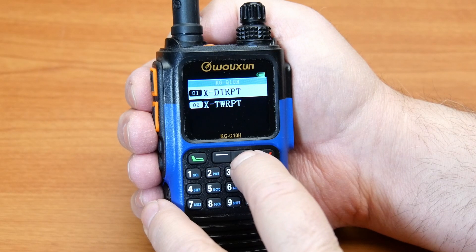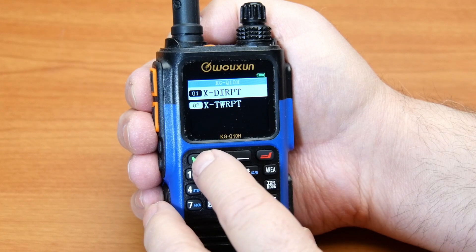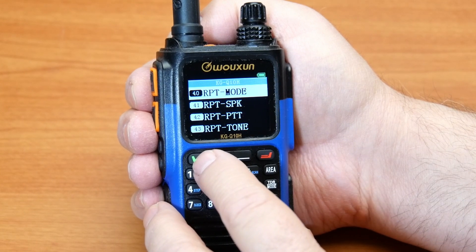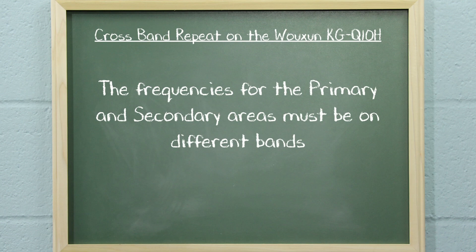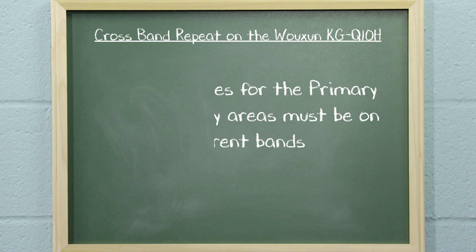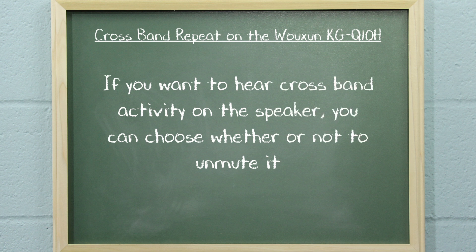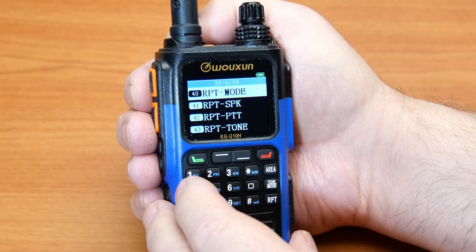Choose the type of crossband repeater you want and press menu to confirm your choice. It is important to note that the frequencies of the primary and secondary areas must be on different bands. If you want to hear crossband activity on the speaker, you can choose whether or not to unmute it.